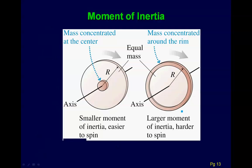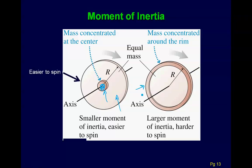Here's a picture from the book showing two wheels. The shaded parts are much more massive. In one wheel the mass is concentrated at the center; in the other it's concentrated on the rim. It's easier to spin the case where mass is concentrated at the center — just like the ice skater: when the arms are in, it's easier to spin; when the arms are out, it's harder. That's the general idea of moment of inertia.